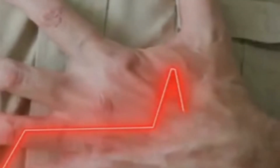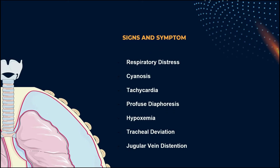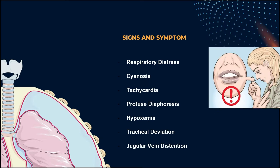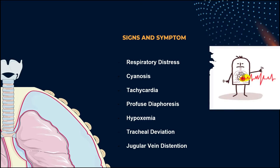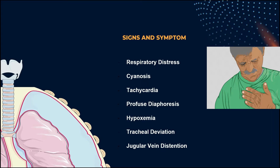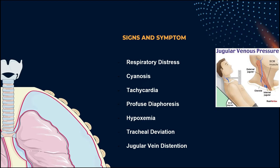There will be nothing to pump, so you'll be tachycardic but hypotensive because it will lower cardiac output. All in all, the clinical picture of a tension pneumothorax is often characterized by respiratory distress, cyanosis, marked tachycardia, profuse diaphoresis, marked hypoxemia, tracheal deviation, and jugular vein distension.